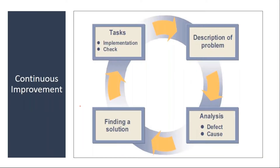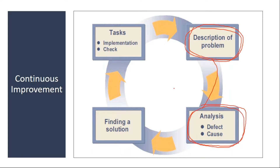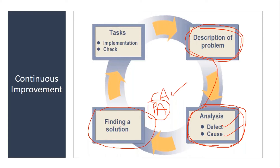These notifications are used for continuous improvement. Whenever you have an issue or a problem, in the notification you describe the problem. Then using that problem, they do the analysis — why the problem has occurred — and enter the analysis details in the system: what is the problem, what is the cause, and then they enter the CAPA information: corrective action and preventive action — what you are going to do so that the problem will not occur again.